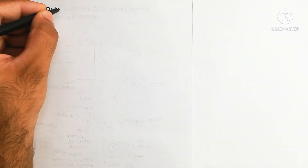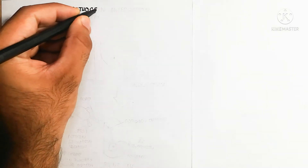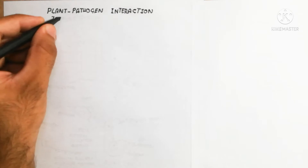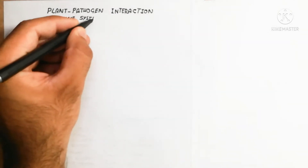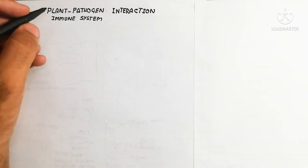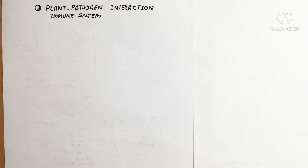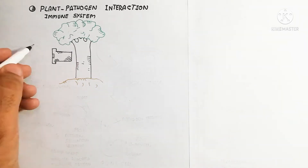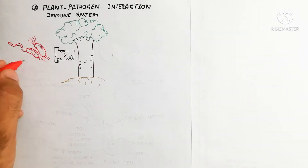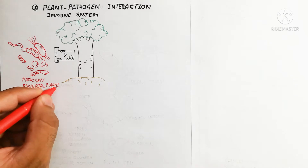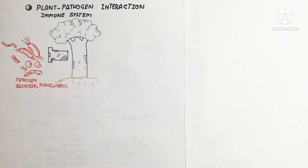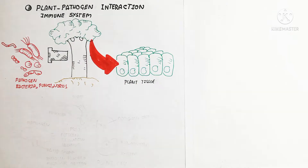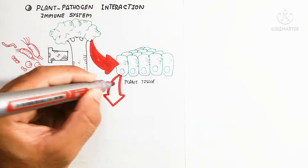Today we will discuss plant-pathogen interaction as an immune system. In the previous video we discussed an overview of the plant immune system, but here we will discuss the plant-pathogen interaction, specifically the cellular immunity present in the plant cell — the immune system that prevents infection by bacteria, pathogens, fungi, viruses, and other agents.